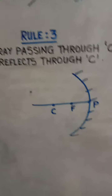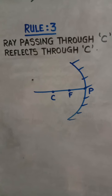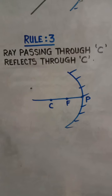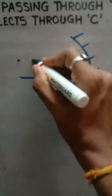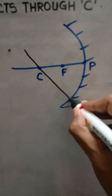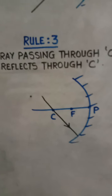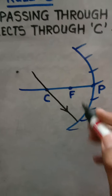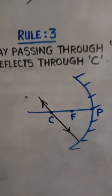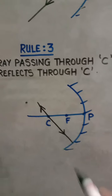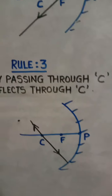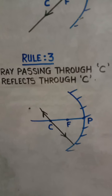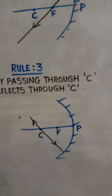According to rule number three, if a ray of light is passing through the center of curvature and strikes the mirror, it will return in the same direction. So a ray passing through the center of curvature reflects back through the center of curvature.